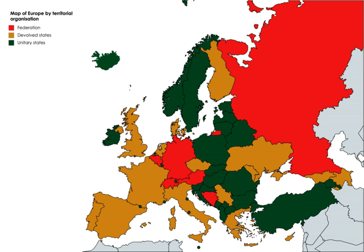In Canada the system of federalism is described by the division of powers between the federal parliament and the country's provincial governments. Under the Constitution Act of 1867, specific powers of legislation are allotted. Section 91 of the Constitution gives rise to federal authority for legislation, whereas Section 92 gives rise to provincial powers. For matters not directly dealt with in the Constitution, the federal government retains residual powers. Areas of contest include legislation with respect to regulation of the economy, taxation, and natural resources.